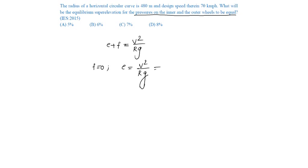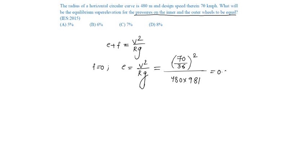From which we know V: 70 kmph divided by 3.6, we convert it into meters per second. Whole square by R is 480, into g is 9.81, we obtain it as 0.08, that is 8%.